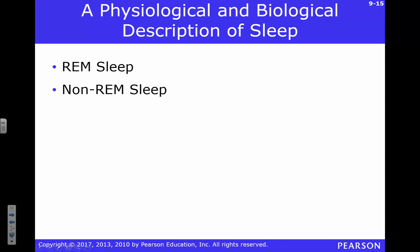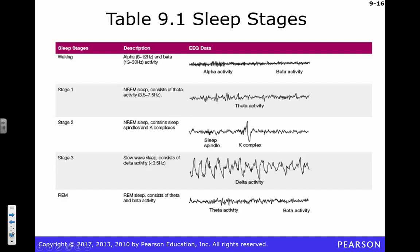All of that was non-REM sleep. Once you get into REM sleep, something different happens. REM sleep looks very much like awake EEG recordings — we get a lot of beta activity, which is what we see in the awake state. The EEG recording from someone in REM sleep is going to be nearly identical to someone who's awake.